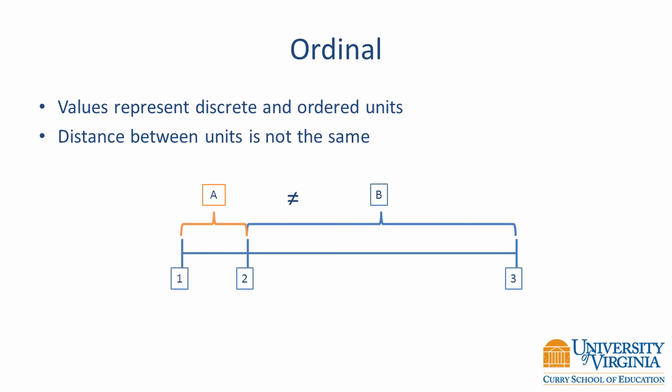Ordinal values also represent discrete units, but values are inherently ordered. An example is the finish order of runners in a race — first place, second place, and so on. The main limitation is that the distance between units is not the same. The distance between first and second place could be an inch or it could be 10 feet, and the distance between second and third place could be 3 feet or 20 feet.